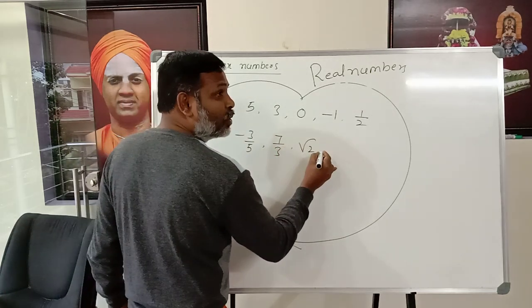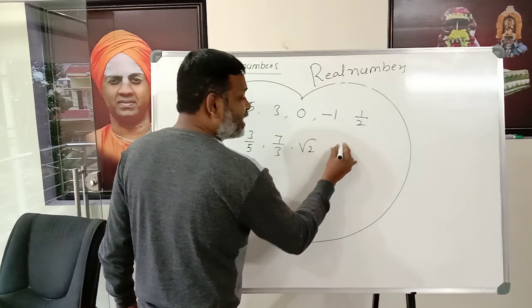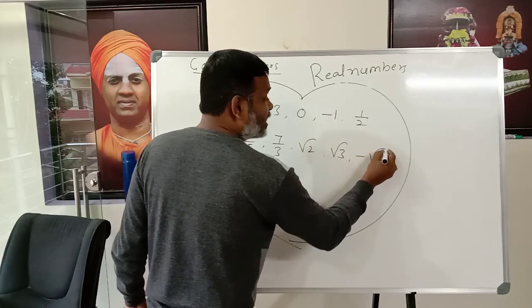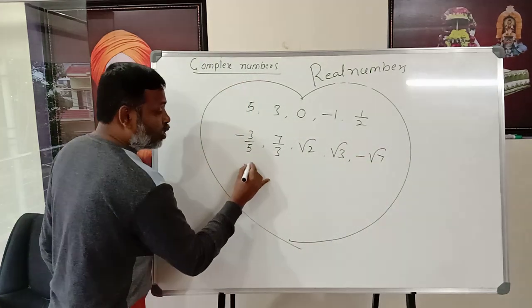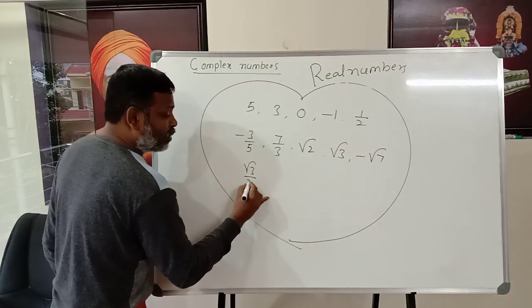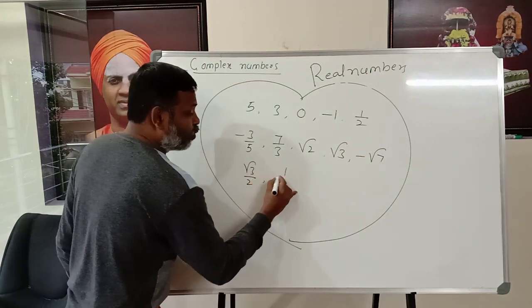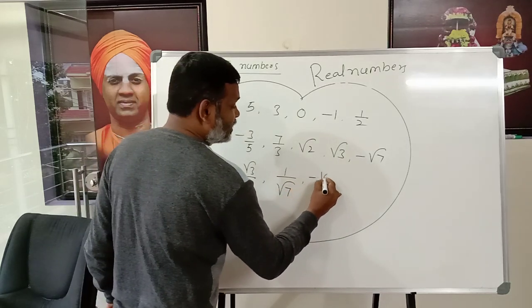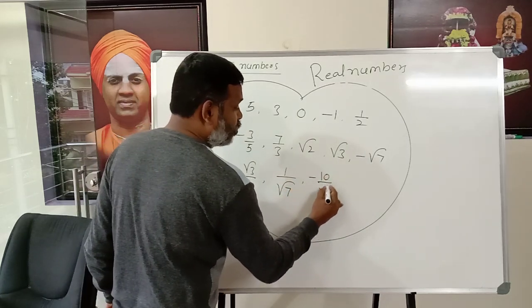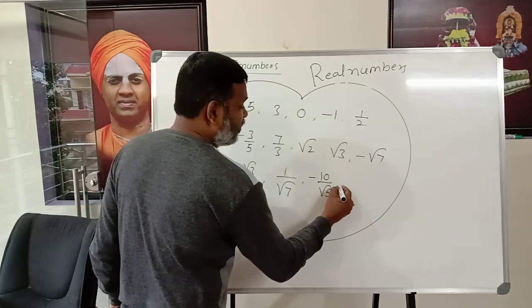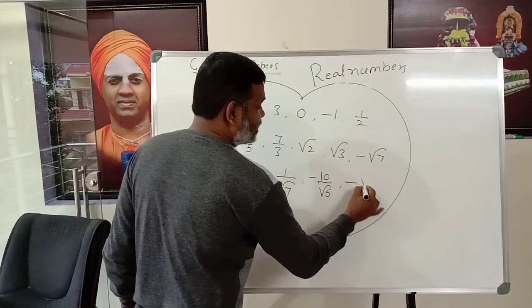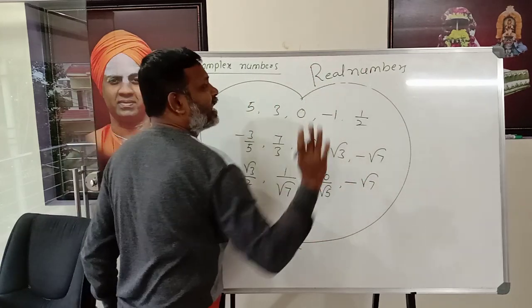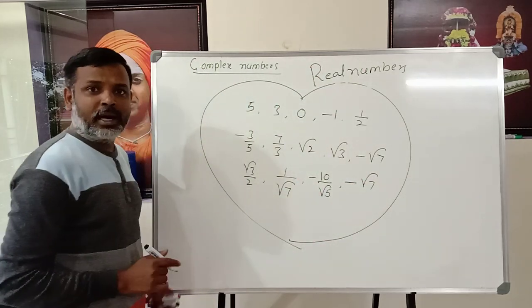For example, numbers like √5 or −√7 — all these are what we call real numbers.